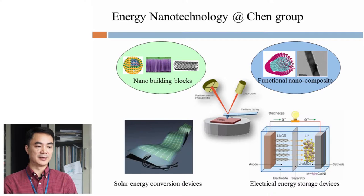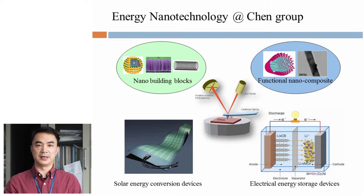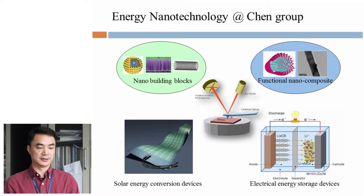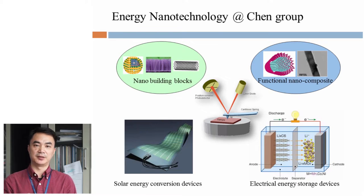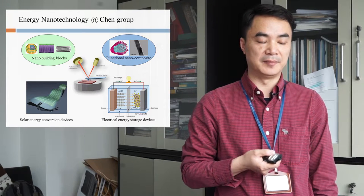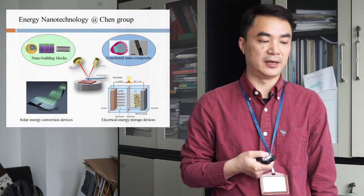My group in Suzhou, generally speaking, we are interested in energy nanotechnology. We make nano building blocks such as nanoparticles, nanowires, nanotubes, and we make functional composites and then make these materials into devices. The two major types of devices we are interested in are solar energy conversion — that is to say PV devices — and electrochemical energy storage: batteries and supercapacitors. But for both of these devices, the performance is determined not only by the materials themselves, but also the interfaces in between. So in my group, we use atomic force microscopy as a characterization tool to look at interfaces and understand more detailed mechanisms.